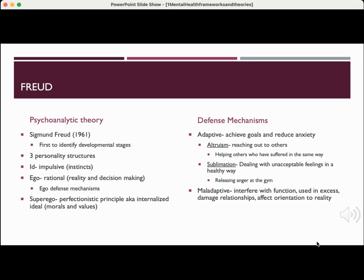Defense mechanisms can be adaptive or maladaptive. Adaptive mechanisms help you achieve goals and reduce anxiety — an example is altruism, reaching out to others who have suffered in the same way, such as surviving cancer and then volunteering with a cancer organization. Another example is sublimation: dealing with unacceptable feelings in a healthy way, like releasing anger at the gym.